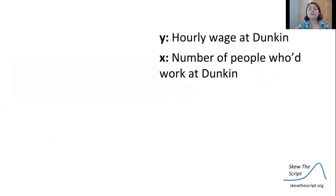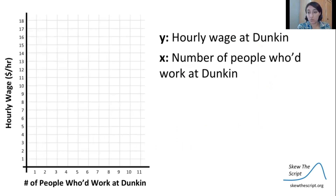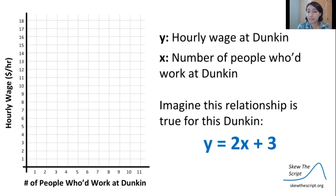So what we're going to do is look at some linear equations. We're going to consider the y variable to be the hourly wage at Dunkin' Donuts. And the x variable is going to be the number of people who are going to be working there — who want to work there. And we're going to go ahead and plot this on a graph.